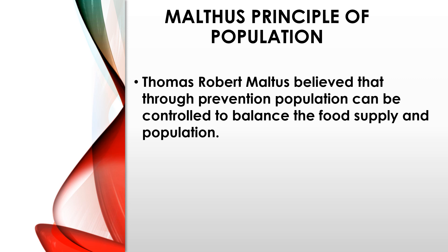We have here Malthus' Principles of Population. So who is Malthus? Thomas Rupert Malthus believed that through prevention, population can be controlled to balance the food supply and population. He is an English cleric and a scholar who published his theory in 1798, entitled 'The Principle of Population,' in which he believed that through preventive checks and positive checks, the population would be controlled to balance the food supply with the population level.